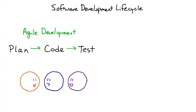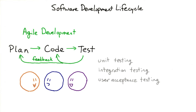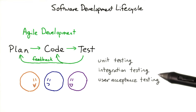Agile development generally covers the steps from planning, to coding, to building and testing, and then iterating on the design again. It also emphasizes collaboration between cross-functional teams. Testing here includes unit testing of code as well as integration testing and user acceptance testing.